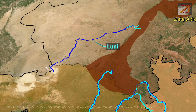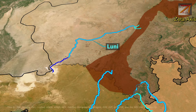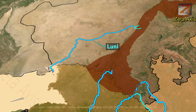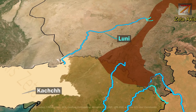The river flows in a south-westerly direction through the hills and plains of the Marwar region in Rajasthan. Luni River enters Gujarat in Kutch district, where it ends in the marshy lands of Rann of Kutch.